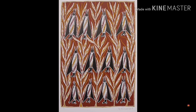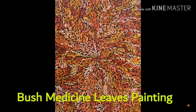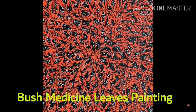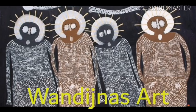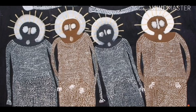Bush medicine leaves, from the Wandjina people of Northeastern Western Australia, are found in the Kimberley region. They are deeply spiritual to the people of this area. These are the different types of Aboriginal art.